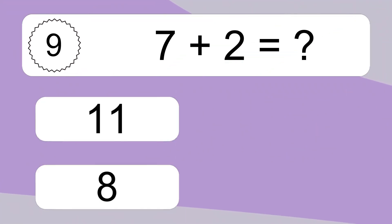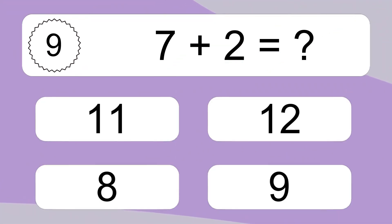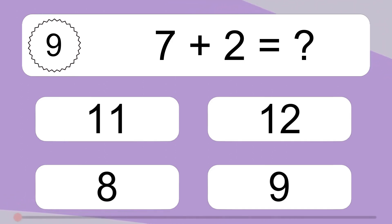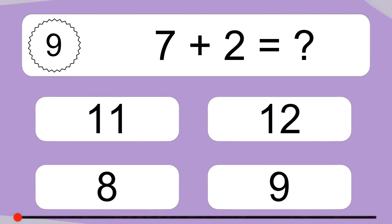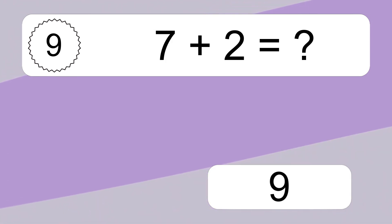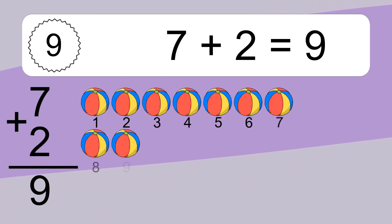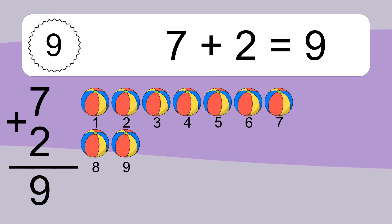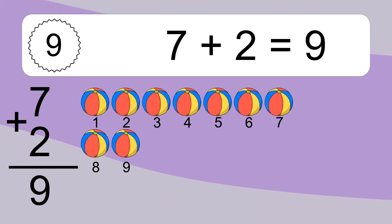7 plus 2 equals what? 7 plus 2 equals 9. Let's count it. 1, 2, 3, 4, 5, 6, 7, 8, 9.